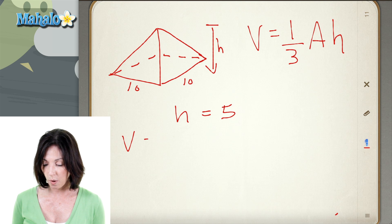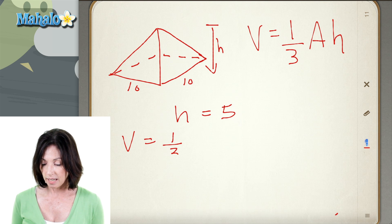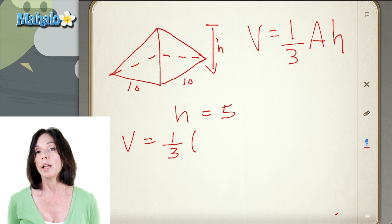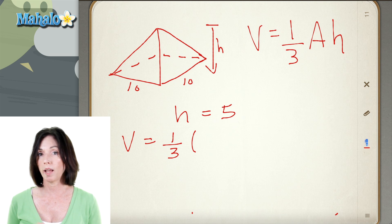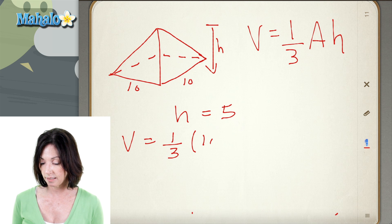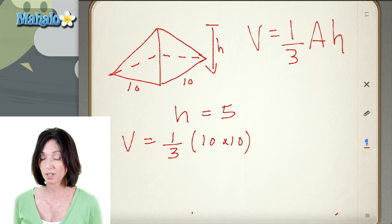The volume equals one-third times the area of the base. Now, the base is a square, so to find its area I just have to multiply one side of the square by the other. So that's going to be 10 times 10. And then I multiply that by the height, which is 5.